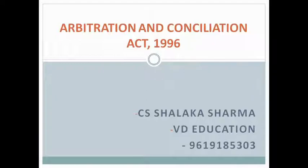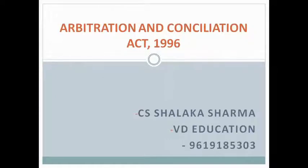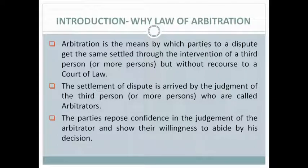Arbitration and Conciliation Act 1996. In this presentation, this slideshow contains your entire JIGL CS Executive chapter on Arbitration from your module — that is from the study material provided by ICSI. This content is not borrowed or copied from any notes; it is absolutely the module copied and pasted for better understanding and for covering each and every concept. This is for CS Executive, Jurisprudence, Interpretation and General Law subject. So why is the law of arbitration necessary?